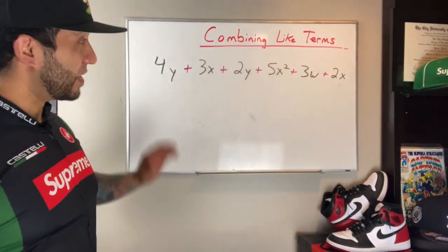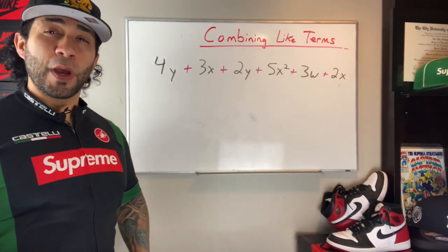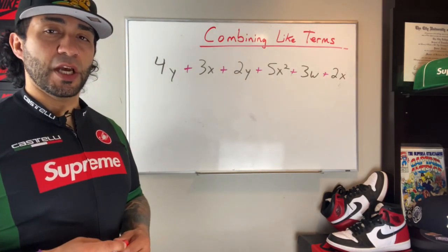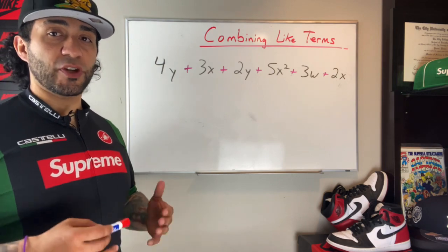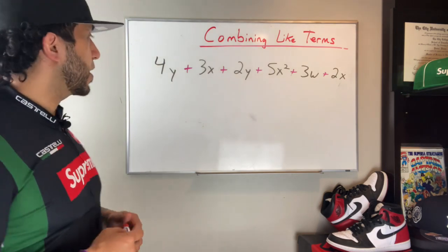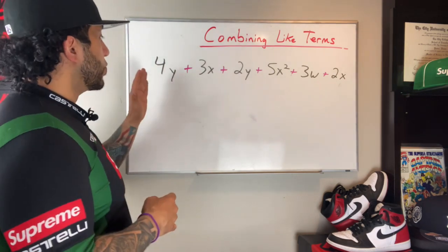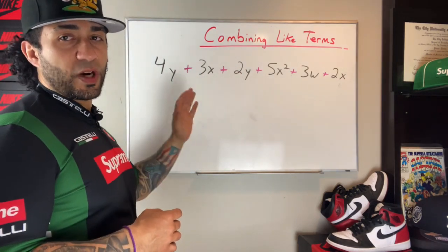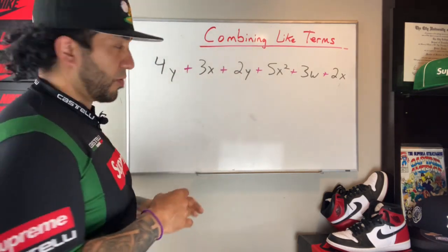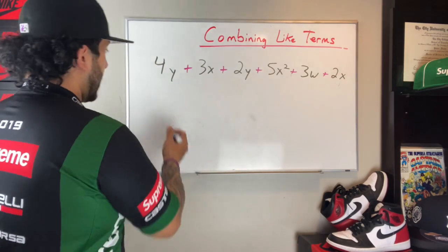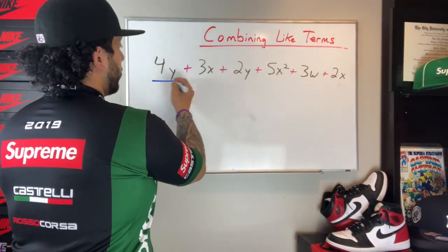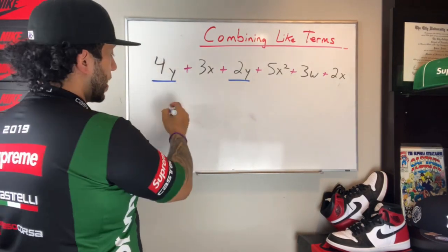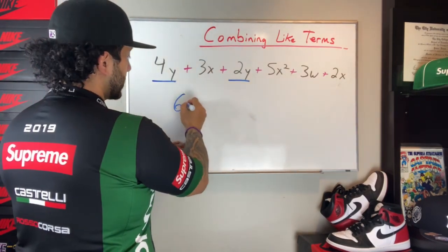In this last example, we have a lot of terms. Because there are so many terms, I'm going to show you a strategy on what you can do to ensure that you're combining the correct like terms. I'm going to start with this 4y and ask myself, are there any other instances where I see the variable of y without an exponent? And I'm going to underline those instances. I got 4y and I got 2y. 4y plus 2y is 6y.